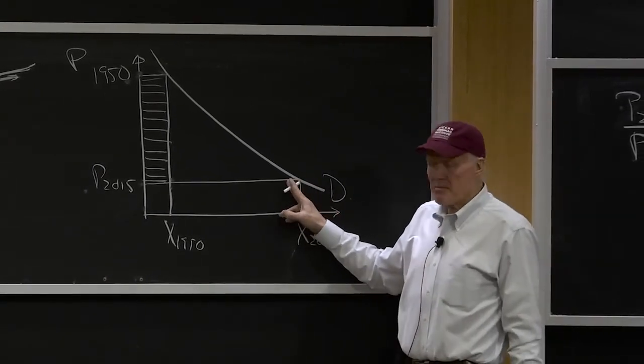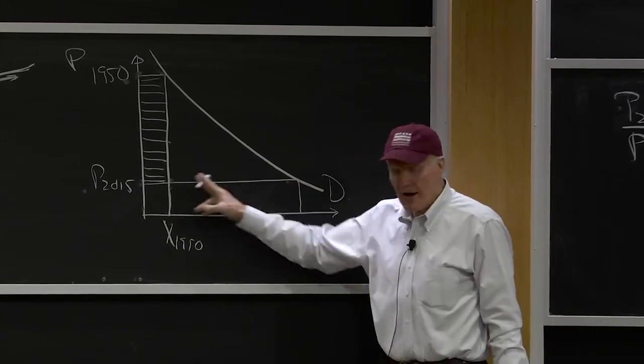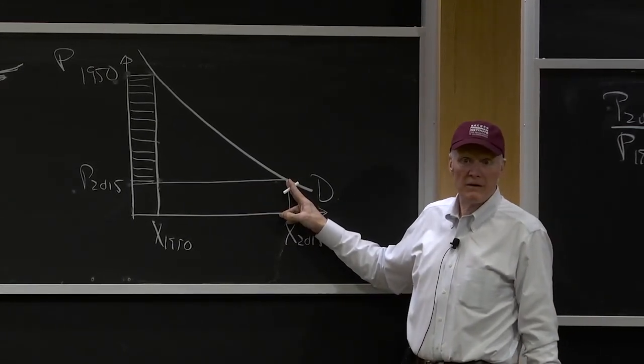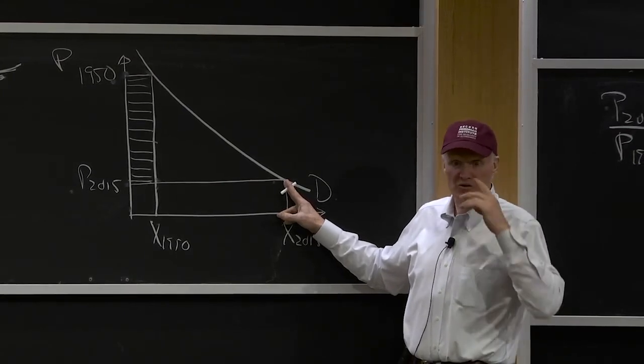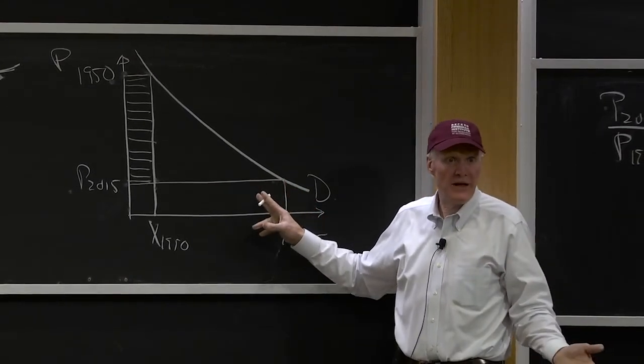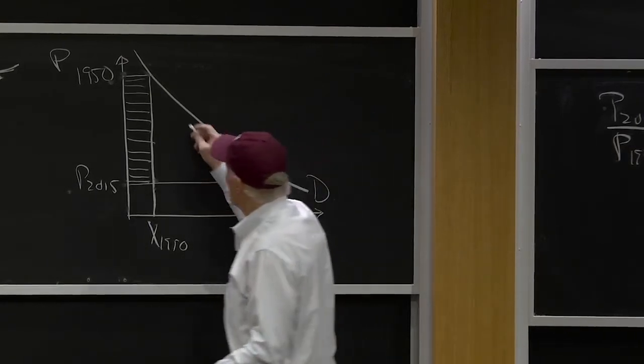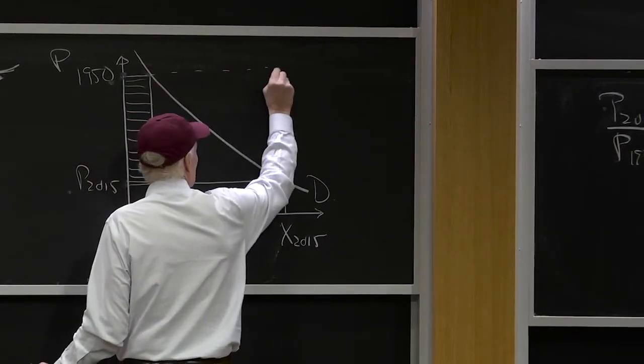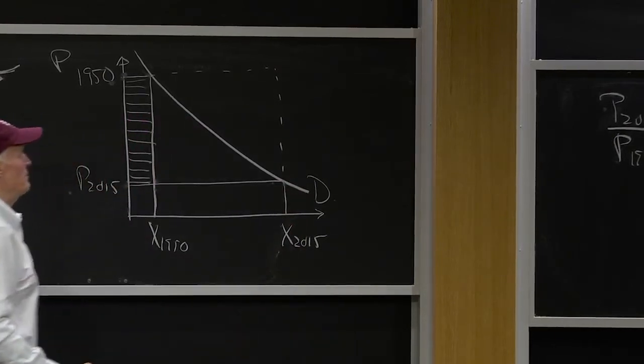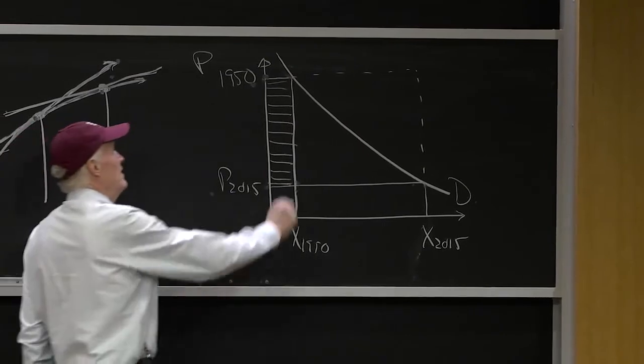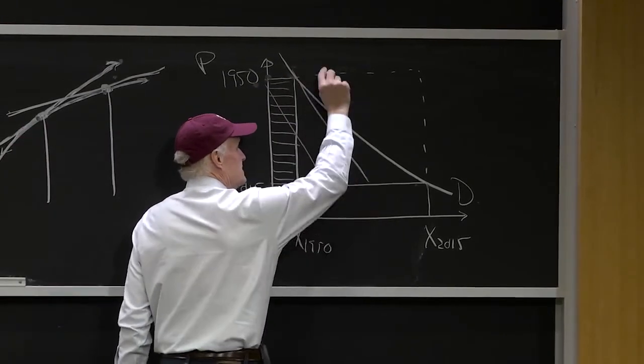Now what would the other price index say? Well, it says I'm buying 100 units. Price goes from 10 to 1. How much did I save? Well, I saved $9 a unit on 100 units. It would say $900 would be the reduction in cost, which would correspond to this really big box. That is, it would measure the price index change by this entire area.